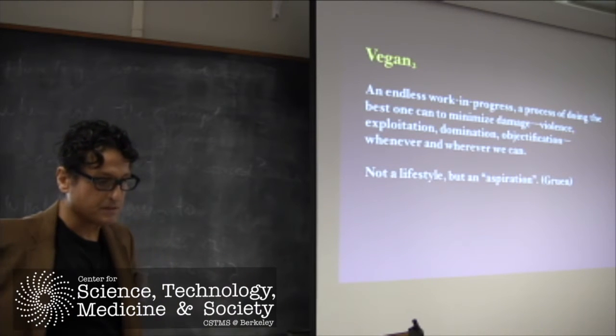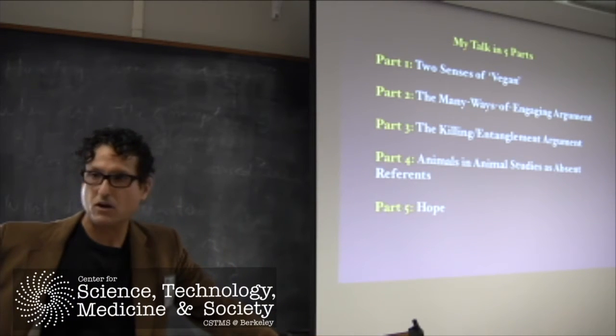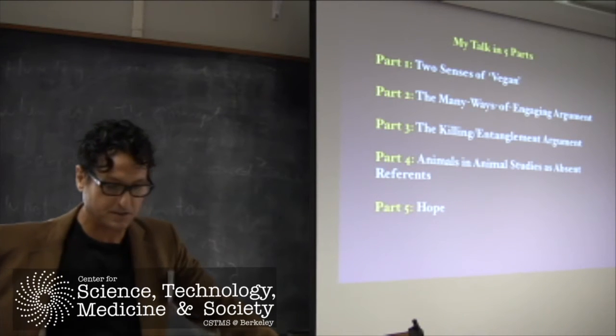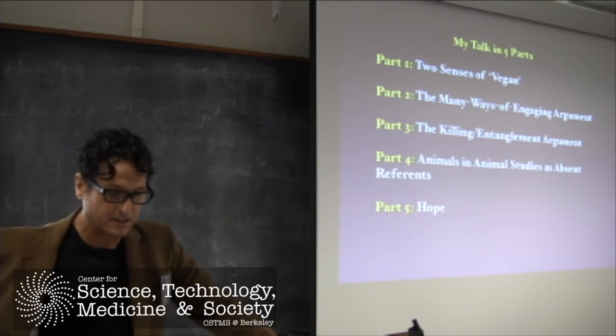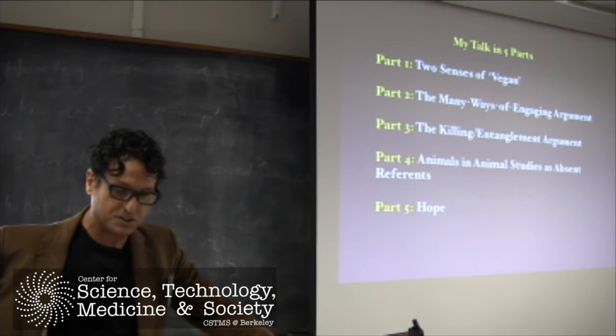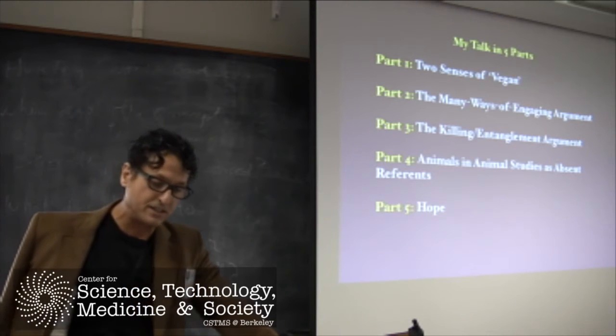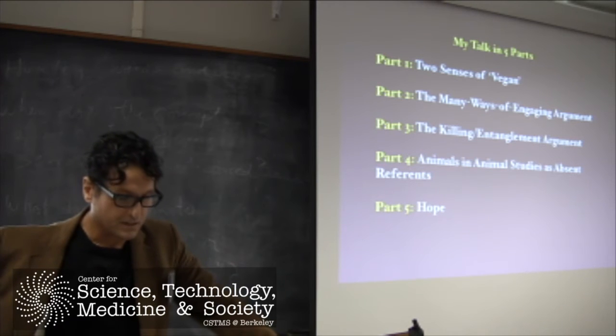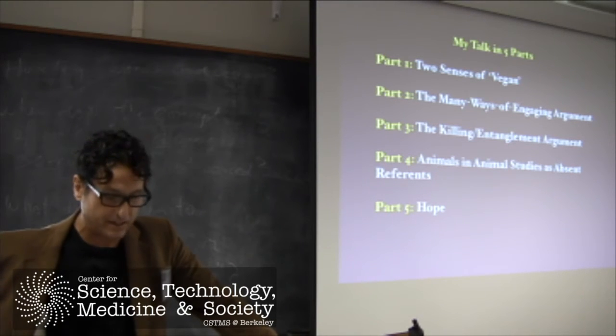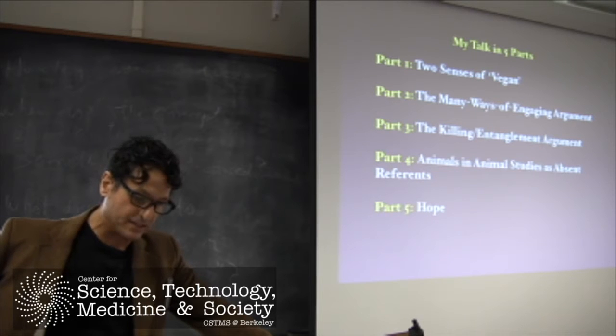Part two: The many ways of engaging argument. One common argument I hear from my colleagues is what I call the veganism is just one way among many of engaging ethically with animals argument. This argument centers around issues of industrialization and production. Vegans cannot escape the cycle of industrialized violence and destruction of animals in their habitats. For example, one could be a vegan but eat soybeans produced by Monsanto or consume palm oil, contributing to the destruction of rainforests and harming animals such as orangutans or tigers. Therefore, though caring, compassionate people have good reason to engage ethically with animals, there is no compelling reason to privilege veganism over any of the other many ways of engaging ethically with animals.